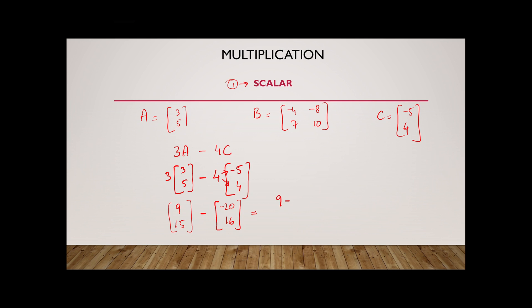Now I'm going to subtract the two matrices. So here I have 9 minus minus 20, and then 15 minus 16. So 9 minus minus 20 is eventually going to turn into plus. I think we can skip that step here and just do it mentally. So 9 plus 20 is going to give me 29, and then 15 minus 16 is going to give me minus 1. So this is how scalar multiplication of matrices is carried out. I hope that's clear.